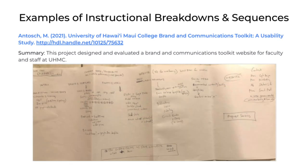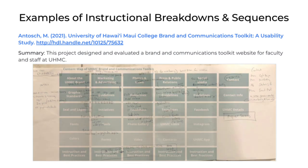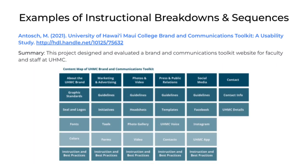Some people prefer to do this initially on paper, and this can be really helpful. This was a project related to a brand and communications toolkit for faculty at the University of Hawaii Maui College. The student started by thinking about all the content and creating initial categories that came together in a visualization where each column represented a chunk of content and the subtopics that would be covered under each of those chunks.